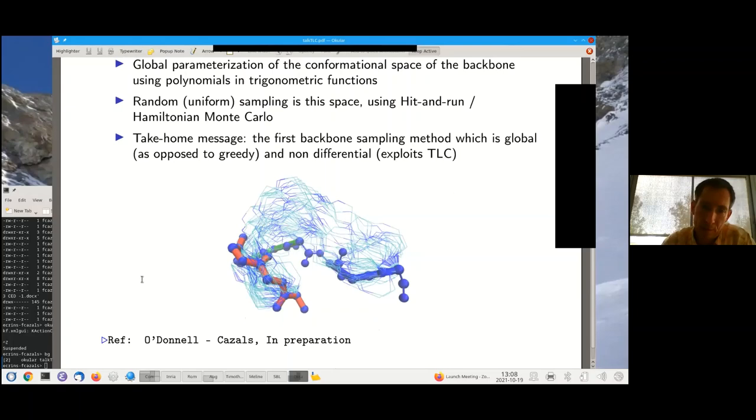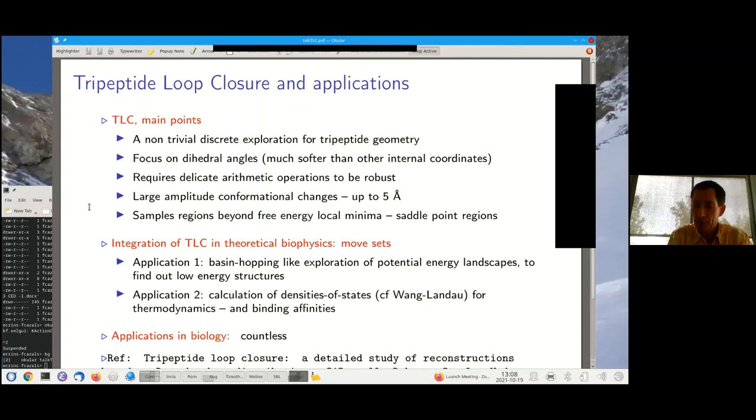So to conclude what I tried to cover here today are two things. So first of all, I hopefully convinced you that looking into tripeptides is very interesting because it makes it possible to enumerate discrete sets of conformations which are highly diverse and which avoid the trap of tiny movements. And this is made possible by focusing on dihedral angles, which are soft internal coordinates or at any rate, much softer internal coordinates than bond length or valence angles. So dealing with tripeptides is numerically challenging. And interestingly, we have seen by looking into the statistics into Ramachandran space that this makes it possible to go beyond metastable states we see in crystal structures.